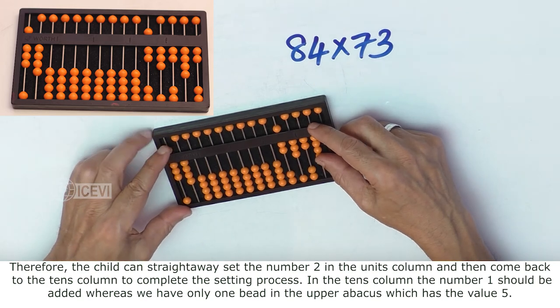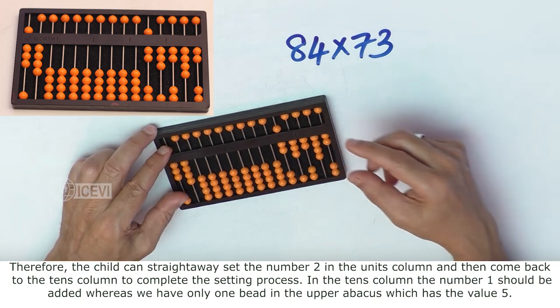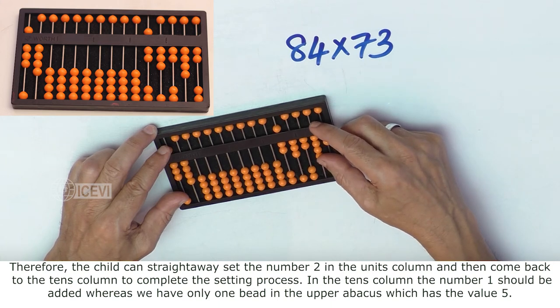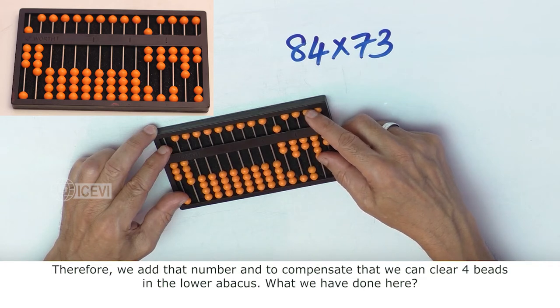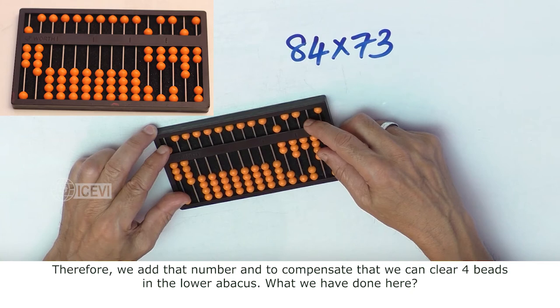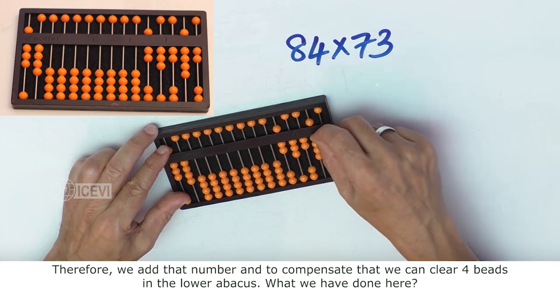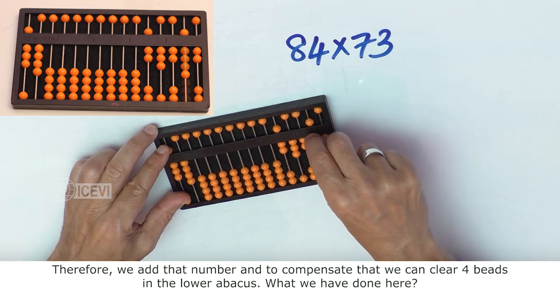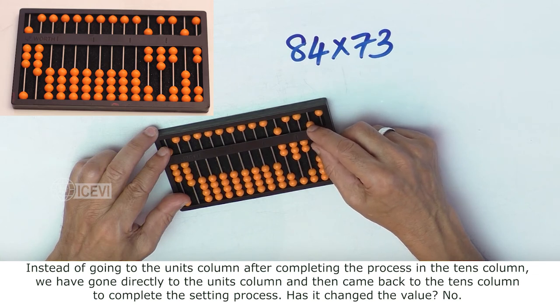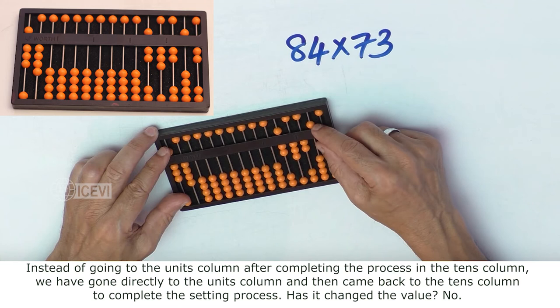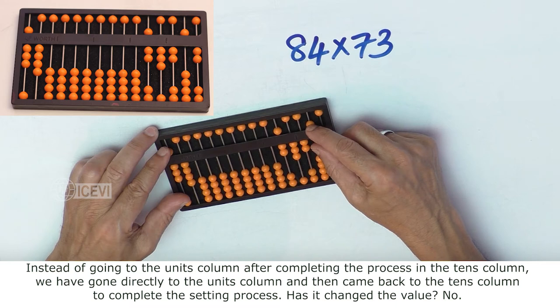In the 10th column the number 1 should be added, whereas we have only 1 bead in the upper abacus which has the value 5. Therefore we add that number and to compensate we can clear 4 beads in the lower abacus. What we have done here: instead of going to the units column after completing the process in the 10th column, we have gone directly to the units column and then came back to the 10th column to complete the setting process. Has it changed the value?